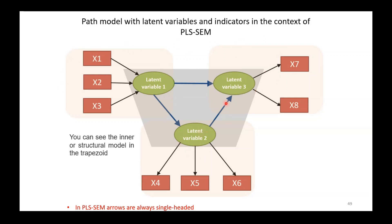So we have one formative and two reflective measurement models. The relationships between the latent variables, represented by blue arrows, form the structural model — shown in the trapezoid area. In any PLS model we have measurement models plus a structural model. When analyzing a PLS model, you first evaluate the reflective and formative measurement models, and only then evaluate the structural model.